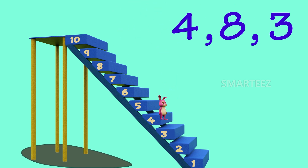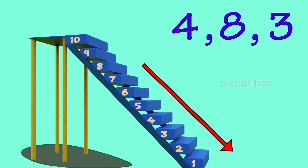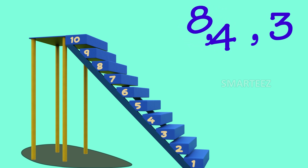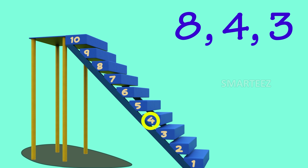Well, you can see that there was a jump up from 4 to 8 before a jump down to 3. But we know that the jumps have to be always going down for descending order. Let's change the order of 4 and 8 and leave the third number 3 where it is, so it will be 8, 4 and 3.